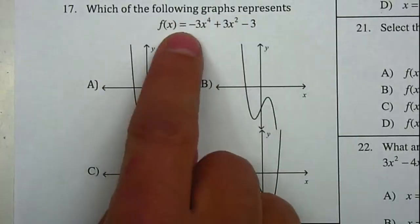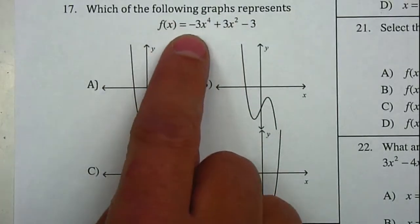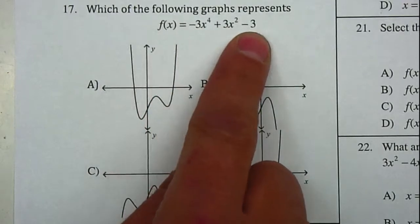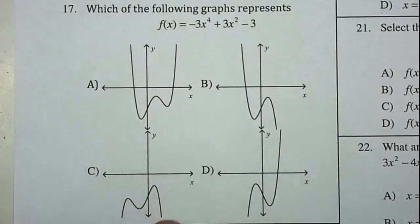Which of the following graphs represents this function? Negative 3x to the 4th plus 3x squared minus 3. And they give you different graphs that you need to select.